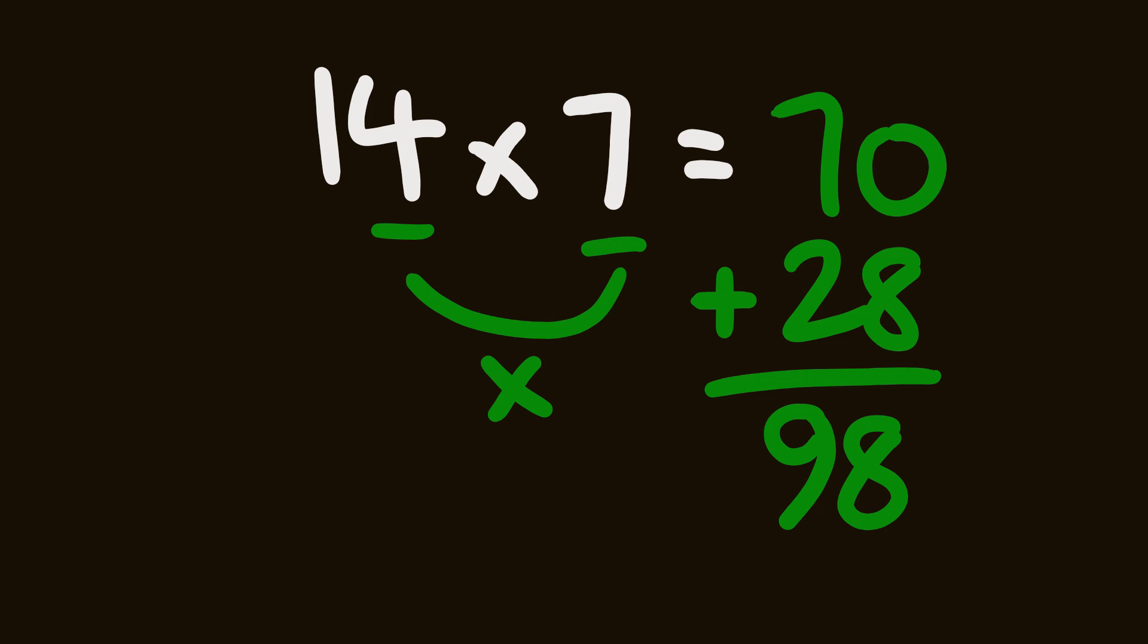Now why does this work? You can probably see, it's not that hard to work out. If we look at 14 here, it's made up of two parts. It's made up of a 10 part and a 4, and both of these are being multiplied by 7. So we have 10 times 7 and 4 times 7. 10 times 7 is equal to 70.